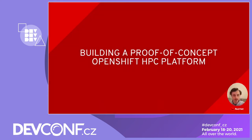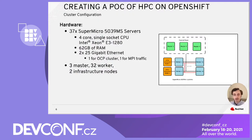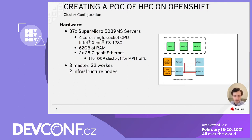I will first introduce the test environment used for the proof-of-concept. The OpenShift cluster was composed of 37 nodes: three masters, two for infrastructure services like telemetry, routing, or storage operators, and 32 worker nodes. For getting the bare-metal reference performance results, we converted these 32 worker nodes to run ROW. Each node has 62 gigabytes of RAM and four physical cores. Hyperthreads were not used. Each node has two high-speed Ethernet NICs — one used by OpenShift for cluster communication and one for MPI traffic.